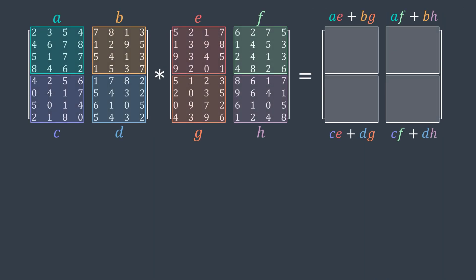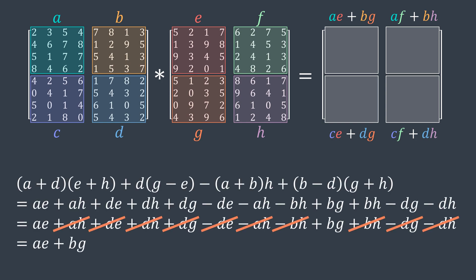Okay, let's go back to the algorithm. After splitting the matrices we need to calculate ae plus bg, af plus bh, ce plus dg, and cf plus dh. For that we calculated eight products and calculated the sums. But in reality, we have a smart way of modifying these sums in order to reduce the required matrix multiplications. Let me show it to you. We can write ae plus bg as (a plus d) times (e plus h) plus d times (g minus e) minus (a plus b) times h plus (b minus d) times (g plus h), because if we simplify it, we get ae plus bg again.